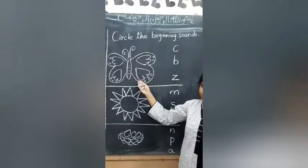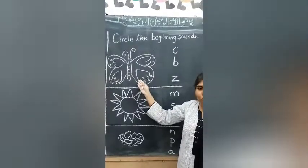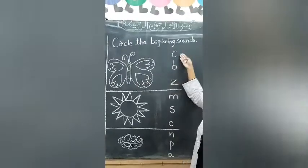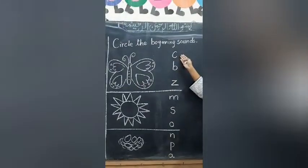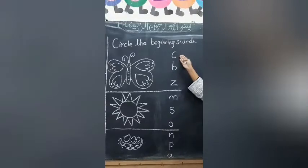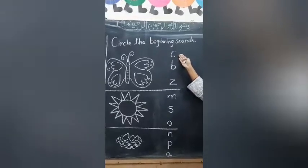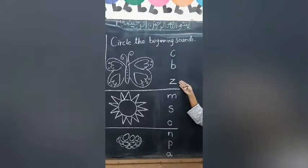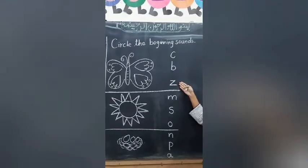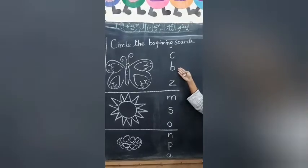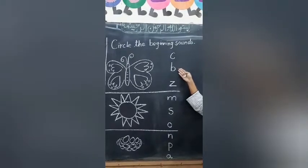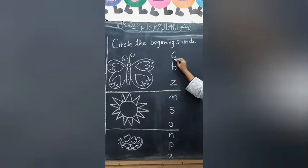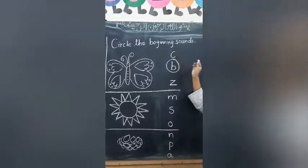The first picture is butterfly. Does this letter make the sound of butterfly? No. Does this letter make the sound of butterfly? No. Does this letter make the sound of butterfly? Yes. We have to circle it.